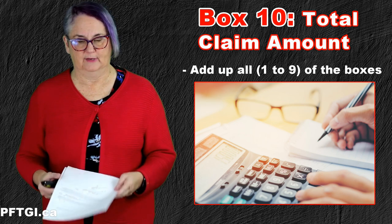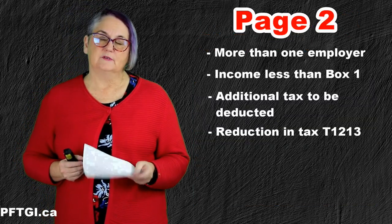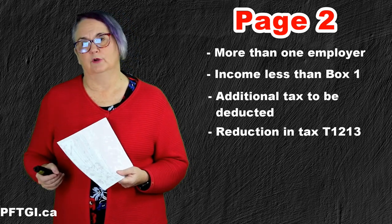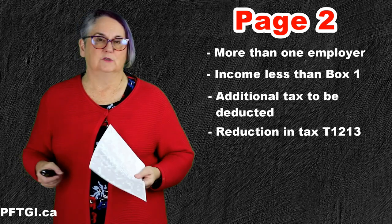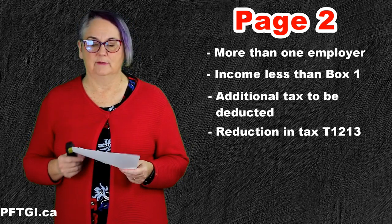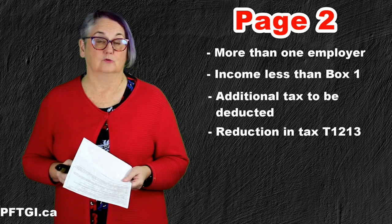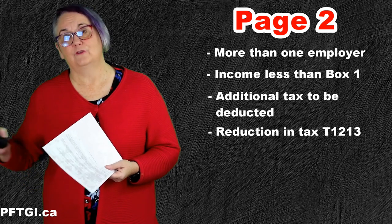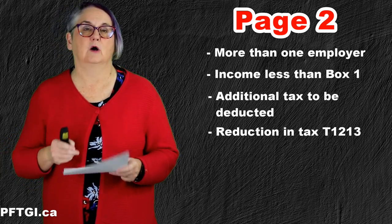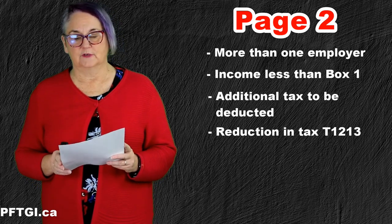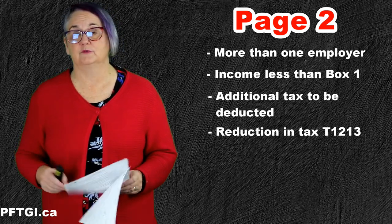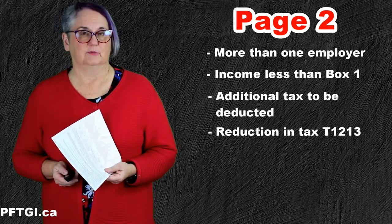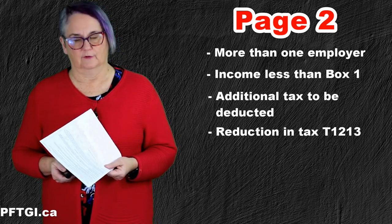There's a back page with a couple of important things on it. One is the more than one employer box. If you have more than one employer in a year, you don't get more than one set of personal deductions — you can only claim that $11,000 once. So if you work for somebody for six months, then leave and get another job, at the new job fill in the TD1 form, tick this box, and don't put any numbers on it. The total on the last box of the first page should be zero, so you don't end up owing money at the end of April because your second employer didn't take enough income tax off your pay.